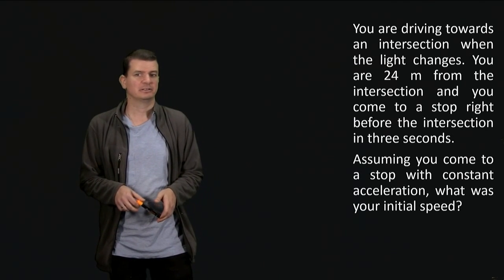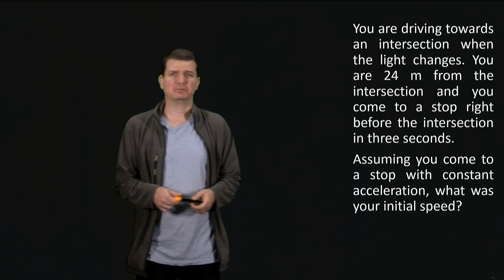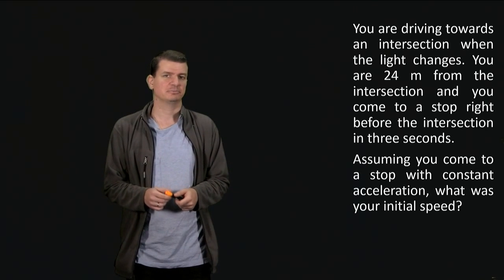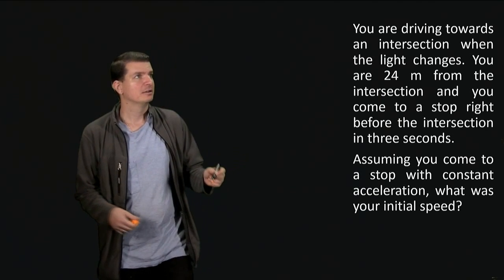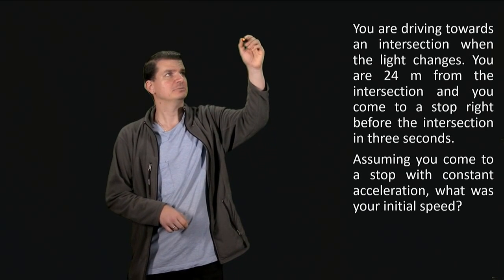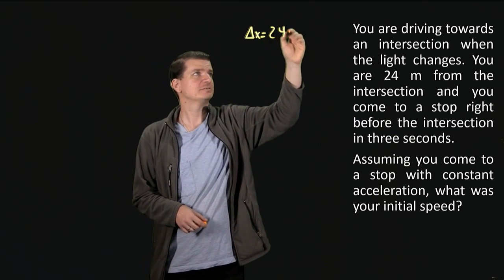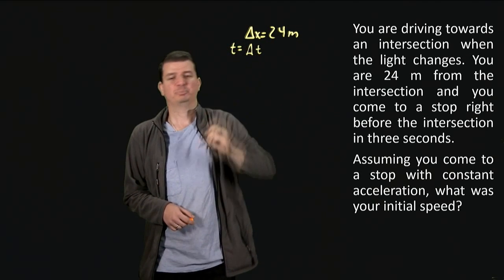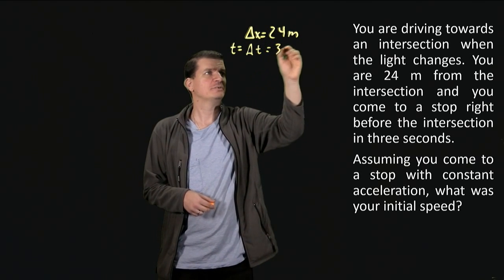What we would like to know based on that information is just how fast were we going initially. We notice that we have one problem: we don't know what the acceleration is. We know it's constant or we're going to assume it was, but we don't know its value. So in terms of things we know, we know that delta x is 24 meters, we know that delta t, which is really just t because we're going to start from t equals zero, that'll be the instant the light changes, is three seconds.